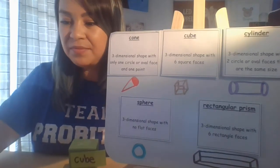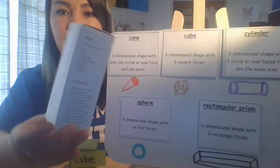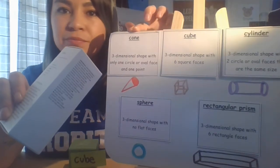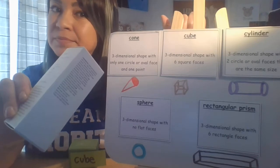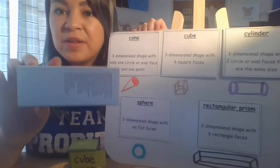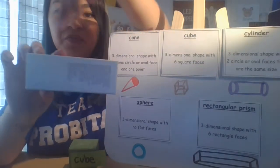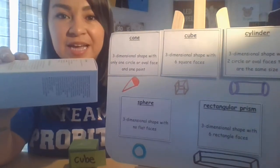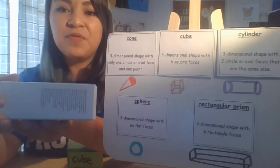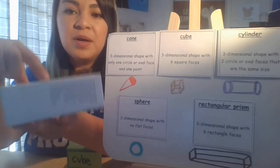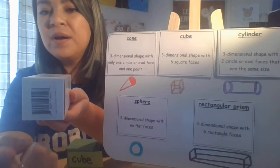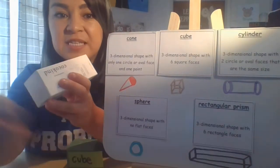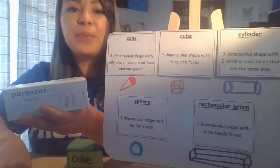Are you ready for our next shape? What shape is this? Is it a cone? Is it a cube? Well, it does have 6 faces, but are they square? Is each face a square? No. This is a rectangular prism. Let's count each of the faces. Ready? 1, 2, 3, 4, 5, and 6. So there are 6 rectangular faces. This makes it a rectangular prism. Good job.